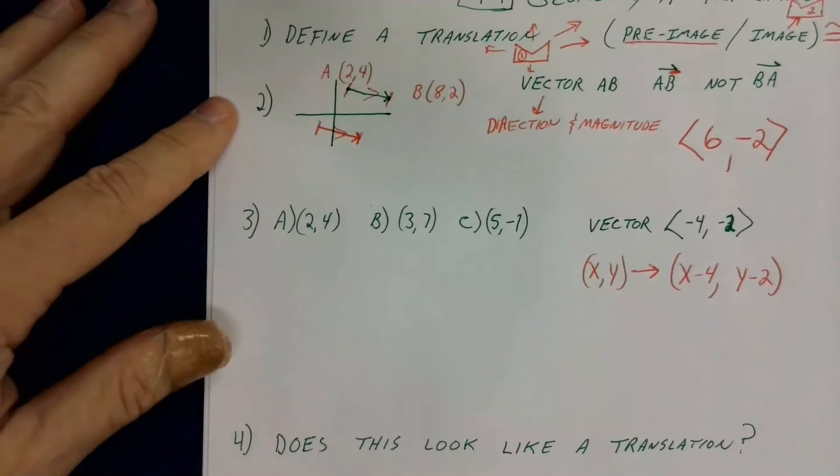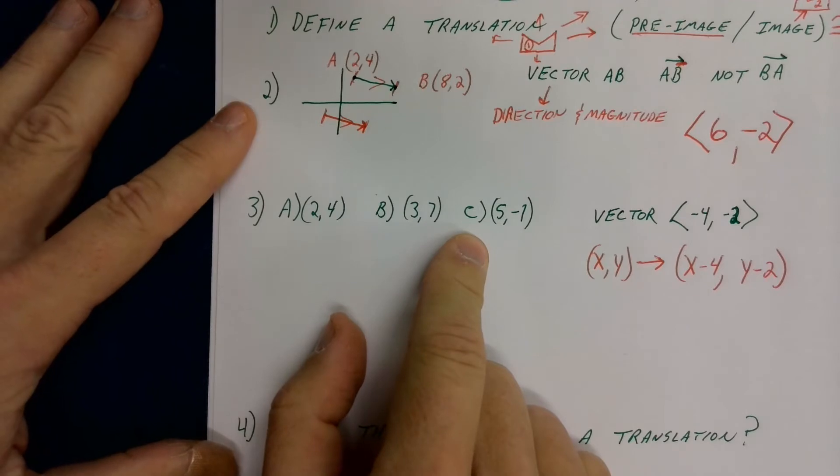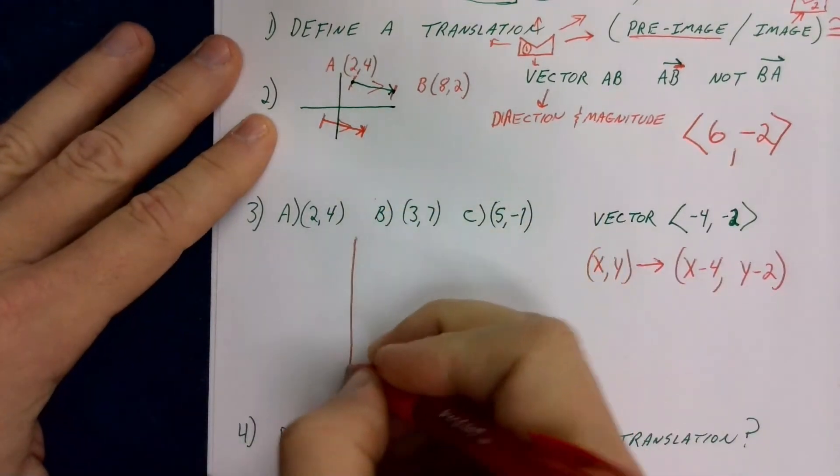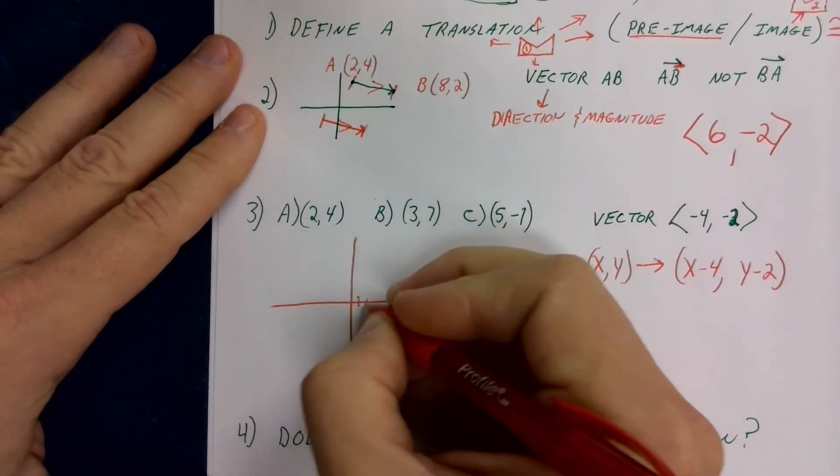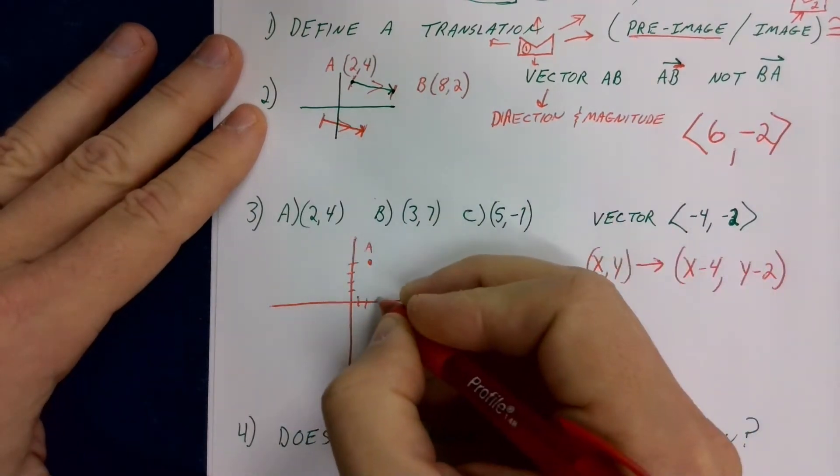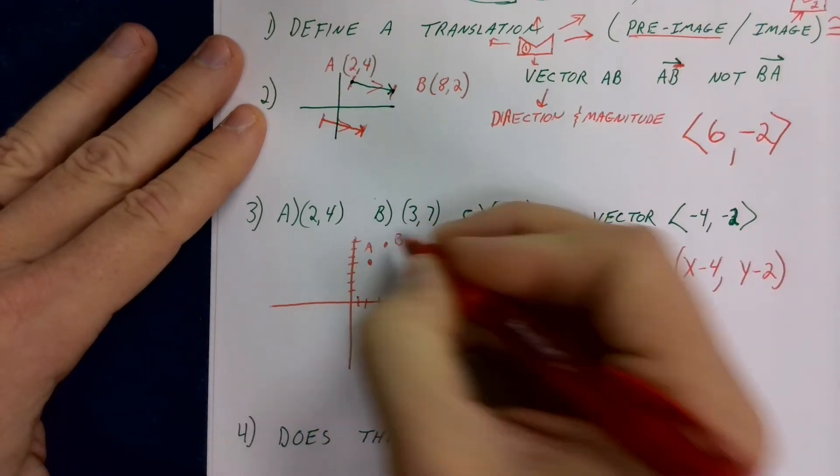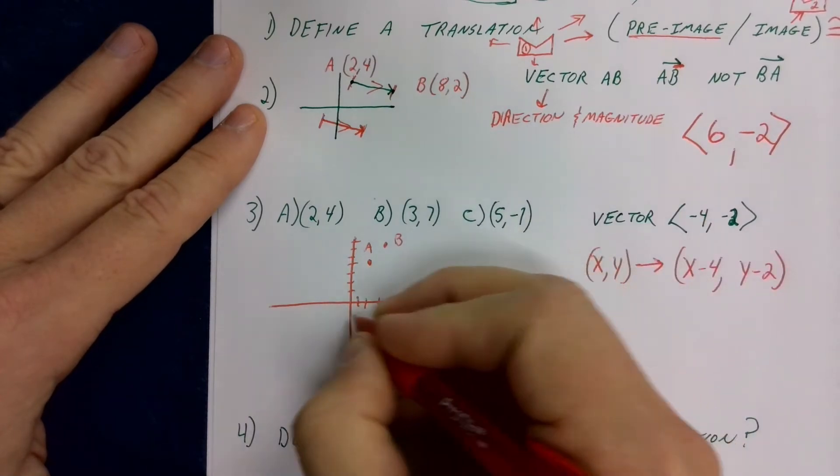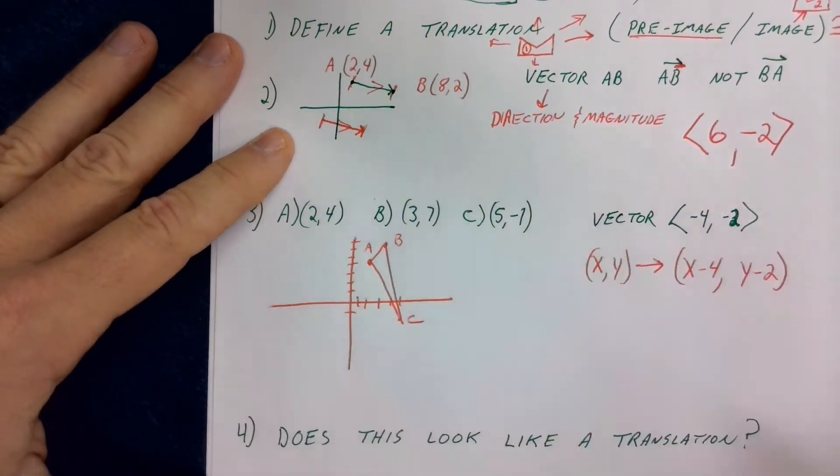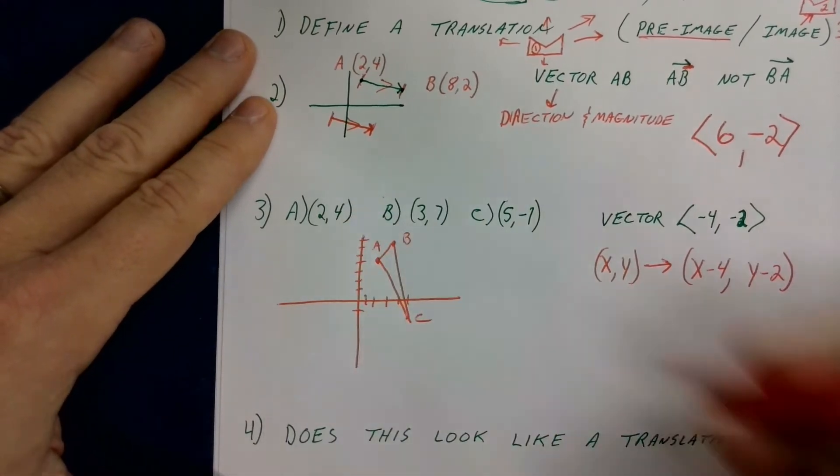So, let's look at translations this way. So I have three points, A, 2,4, B, 3,7, and C, 5, negative 1. And I'm not going to say any of these are vectors, they're just coordinates. So if I go ahead and plot these, just like this, A, 2,4, 1,2, 1,2, 3,4. That's A. B, 3,7, 1,2, 3, 5,6, 7. There's B. And C is 5, negative 1, 4,5, negative 1.